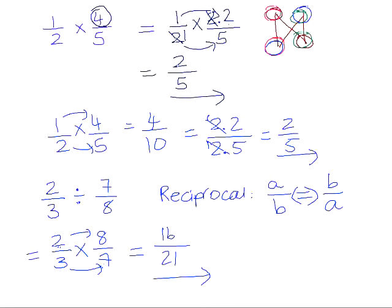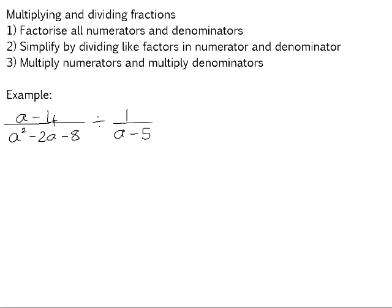Let's have a look at how that applies in algebra. Because it is a simplifying process, we start off by factorizing, then simplify by dividing like factors — any numerator with any denominator. As long as it's a numerator with a denominator, we can't go wrong.